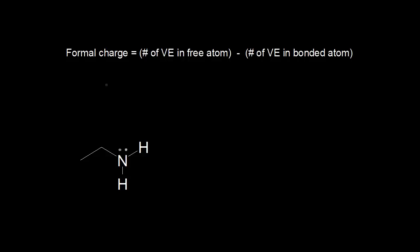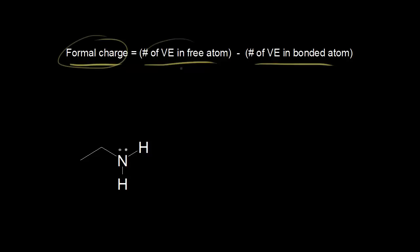In this video, we'll assign formal charge to nitrogen. Just to remind you of the definition: formal charge is equal to the number of valence electrons in the free atom minus the number of valence electrons in the bonded atom. Another way of saying that: formal charge equals the number of valence electrons the atom is supposed to have minus the number of valence electrons the atom actually has in the drawing.